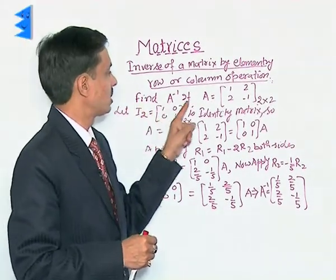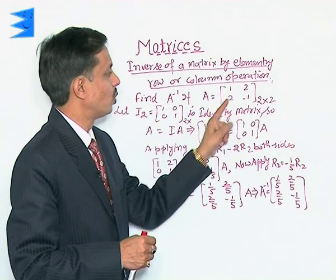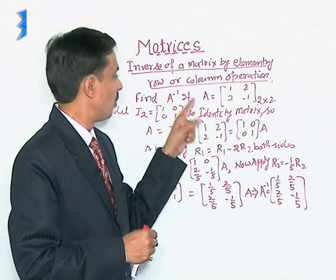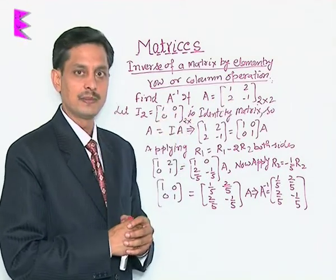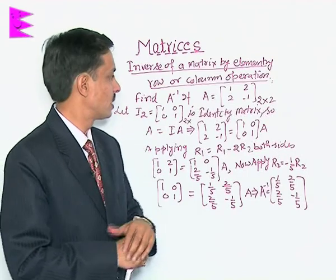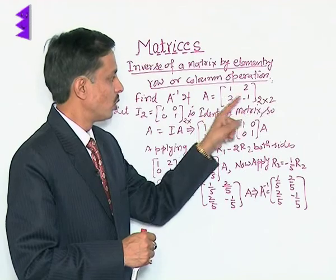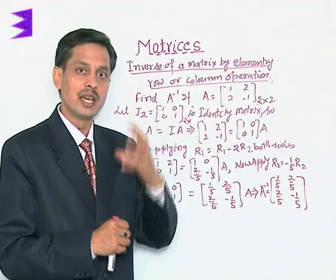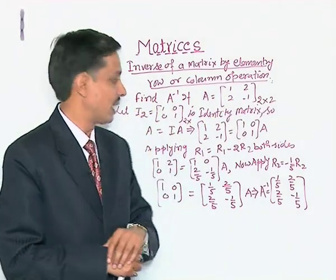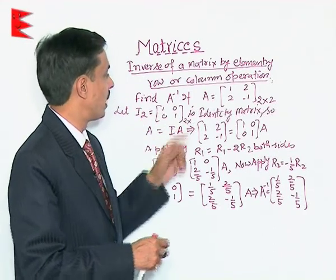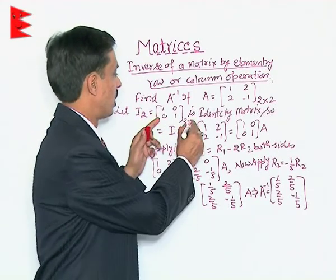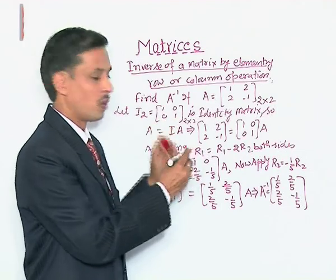Find A inverse if A equals to [[1, 2], [2, -1]]. We want to find inverse of the matrix. To find the inverse of matrix what is required to be done? I have assumed that there is identity matrix of same 2 by 2 order that is 1 0 0 1.